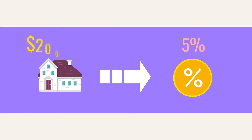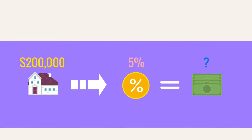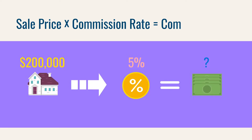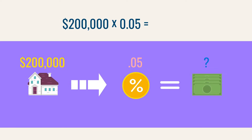A seller has agreed to pay a 5% commission. How much will the seller pay if the house sells for $200,000? To find a basic commission, multiply the sales price by the commission rate: sales price times commission rate equals commission paid. Remember to turn 5% into a number you can use — the decimal for 5% is 0.05. Substituting the numbers: $200,000 times 0.05 equals $10,000.